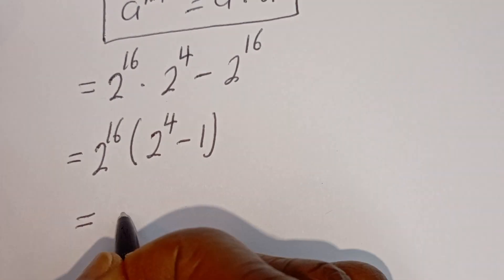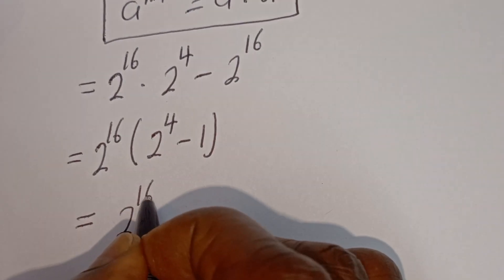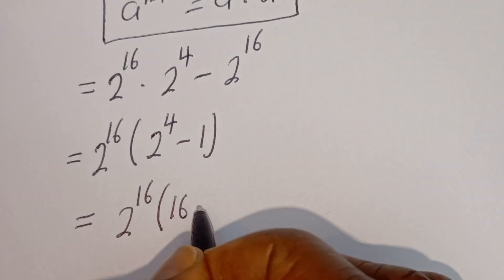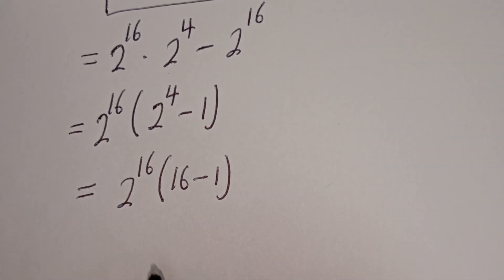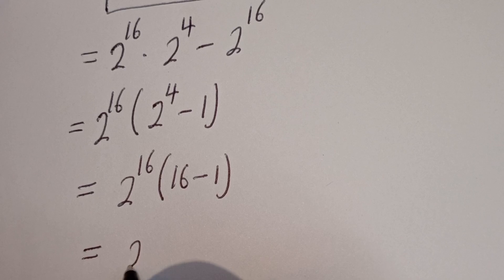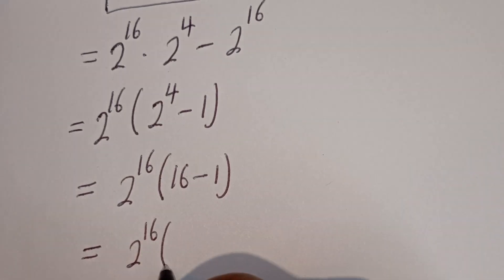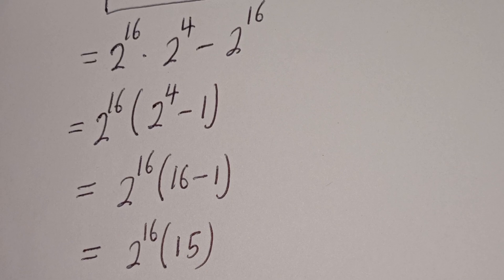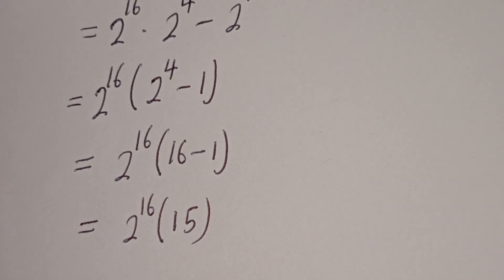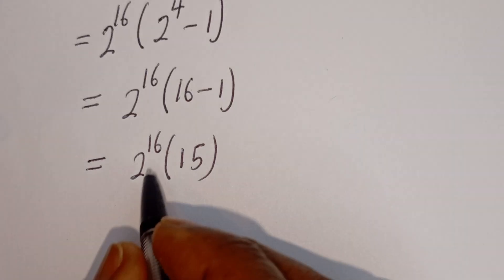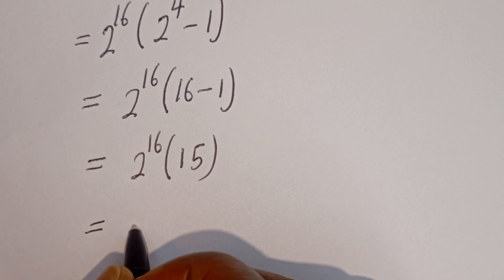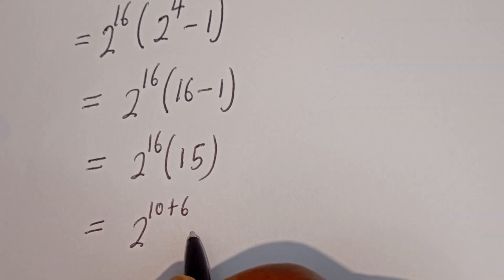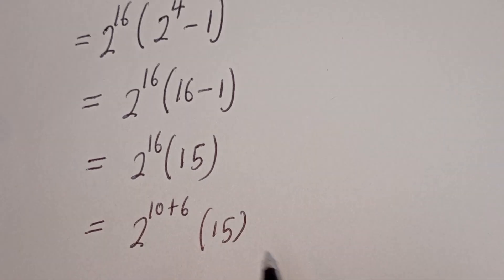Then this is equal to 2 to the power of 16, times bracket 2 to the power of 4 minus 1, which is 16 minus 1, that is 15. So we have 2 to the power of 16 multiplied by 15. Now 2 to the power of 16 can be written as 2 to the power of 10 plus 6, multiplied by 15.